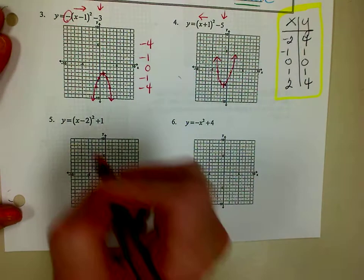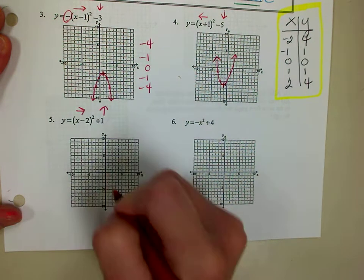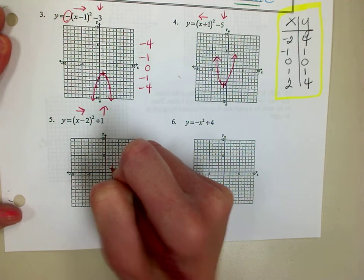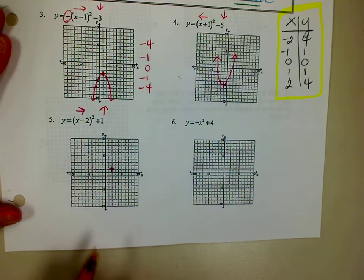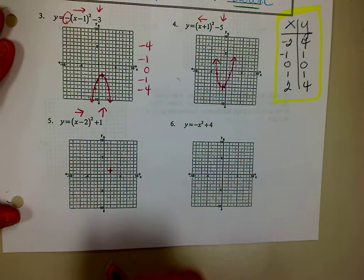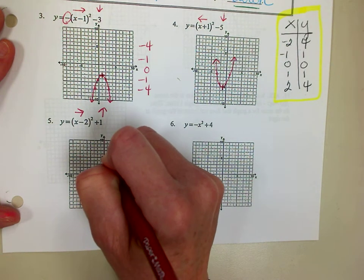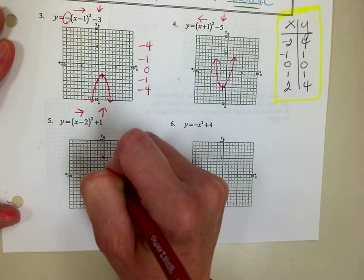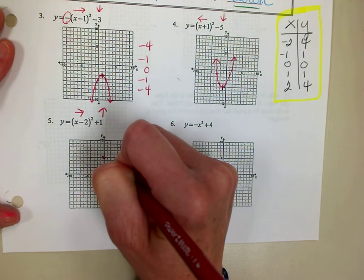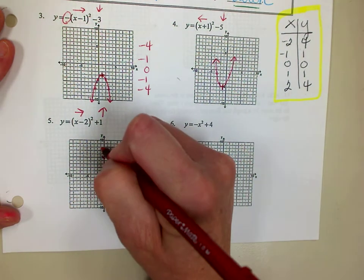This one means I'm going to go to the right 2, up 1. There's my new origin. I don't have a negative in front, so I'm going to plot these points exactly how we see them. And then we connect.